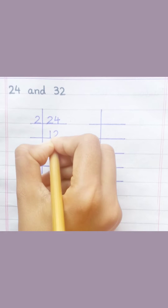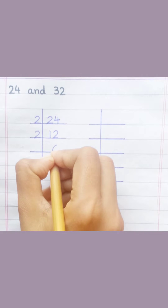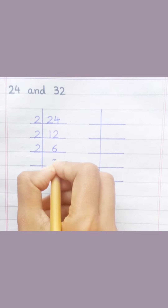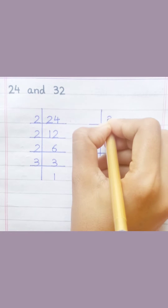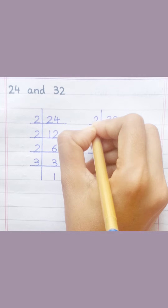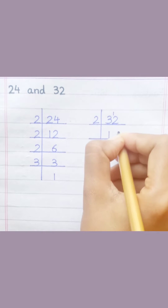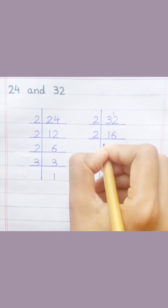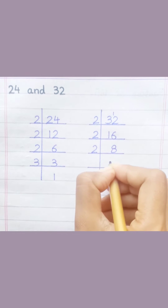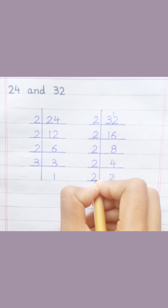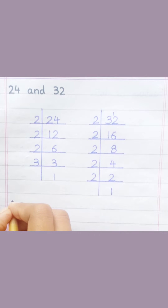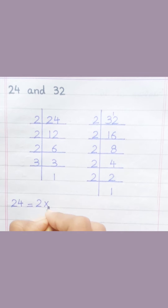Two ones are two. Two twos are four. Two six are twelve. Two threes are six. Thirty-two. Two ones are two. Two six are twelve. Two eights are sixteen. Two fours are eight. Two twos are four. Two ones are two. Twenty-four equal two multiply two multiply two multiply three.